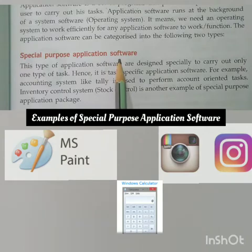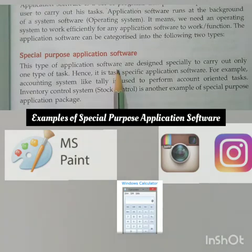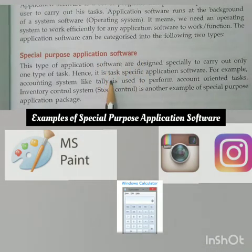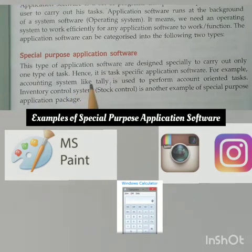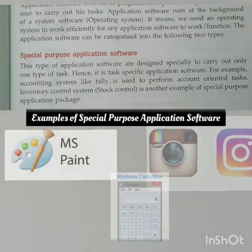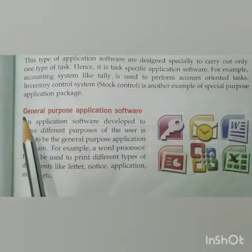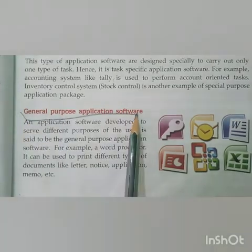Other examples of special purpose application software are web browsers — they allow you to access the internet. Calculators are another example — this software will allow you to perform calculations. These kinds of application softwares are used to perform only one type of task.